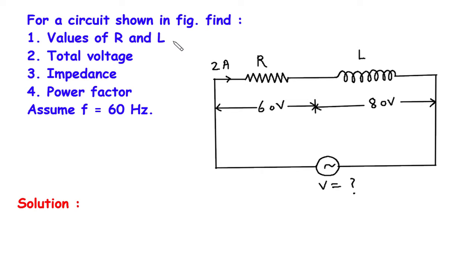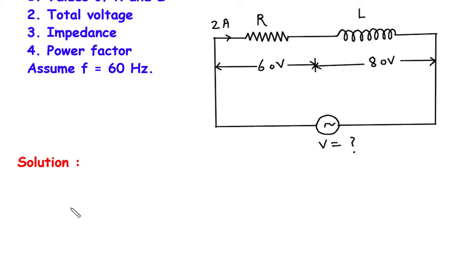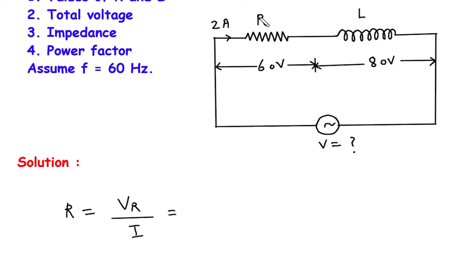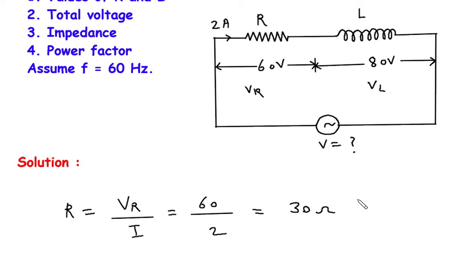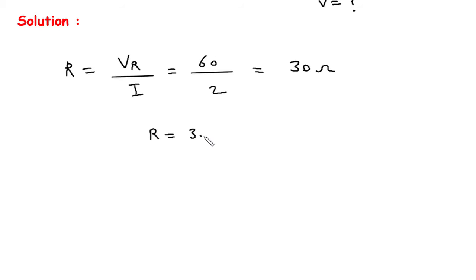First, we find the value of resistance R. According to Ohm's law, voltage equals current times resistance, so R equals Vr divided by current I. Since resistance and inductance are connected in series, the current is the same in both — that is 2 Ampere. Vr is the voltage across the resistance, which equals 60 V. So R equals 60 divided by 2, therefore R is equal to 30 Ohm.